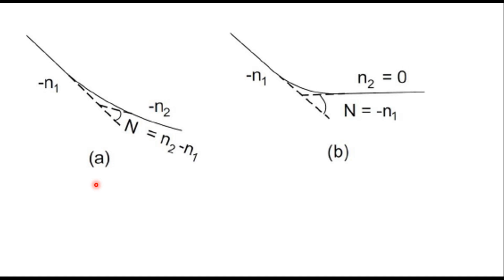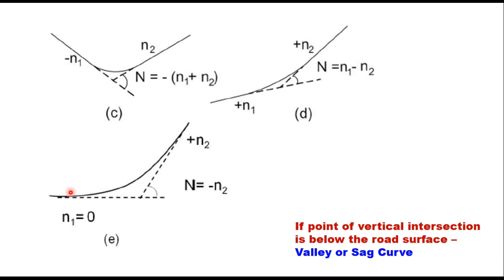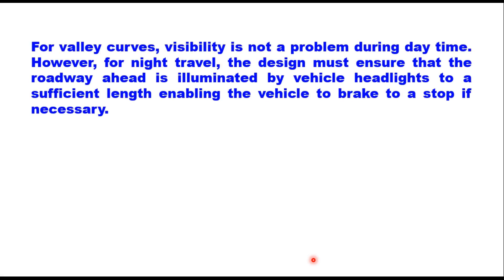Vertical curves are of two types: summit and valley. We have discussed summit curves earlier. The valley curve or sag curve is formed when a steep falling gradient meets a gentle negative gradient, or when a negative gradient meets a level road, or a positive gradient, or when a positive gradient meets a steeper positive gradient, or a level ground meets a positive gradient. In all these cases a valley or sag curve is formed. When the point of vertical intersection is below the road surface, it is called a valley curve or sag curve.